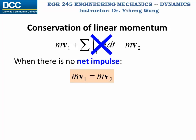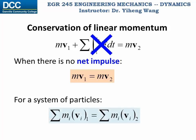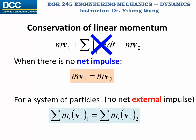The conservation of linear momentum can also be applied to a system of particles. In this case, the total linear momentum of all particles at the initial state equals the total final linear momentum. This applies when there is no net external impulse to the system, since any internal impulse will be canceled out. But sometimes this condition can be relaxed if the external impulse can be considered negligible.